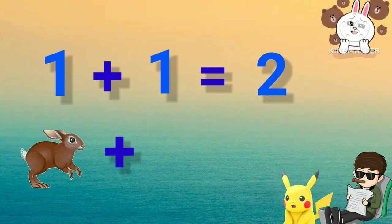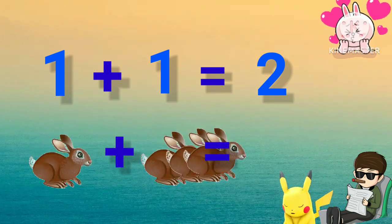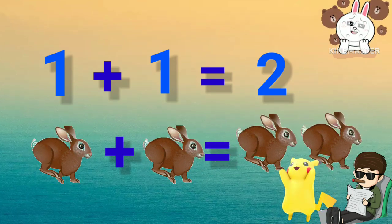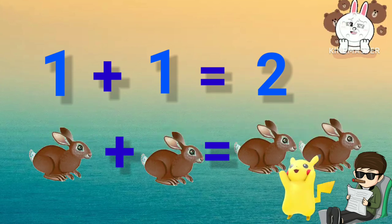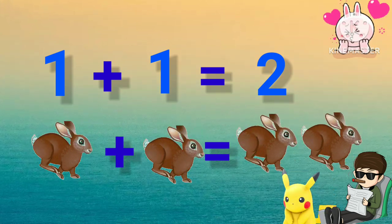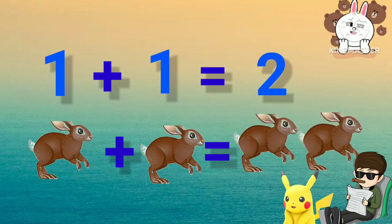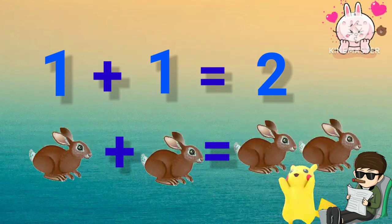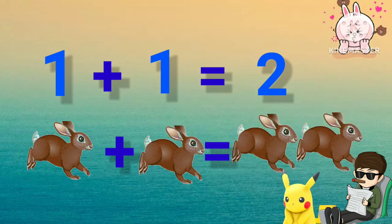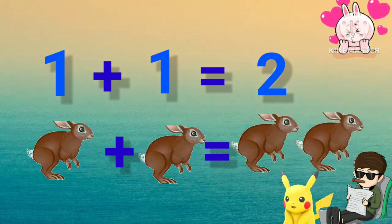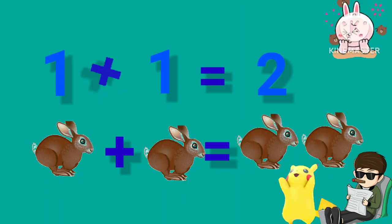1 rabbit plus 1 rabbit is equal to 2 rabbits. 1 rabbit plus 1 rabbit is equal to 2 rabbits. Answer is 2 rabbits.